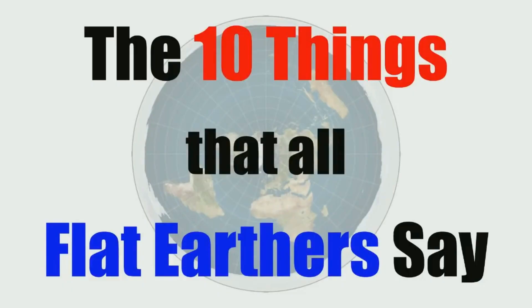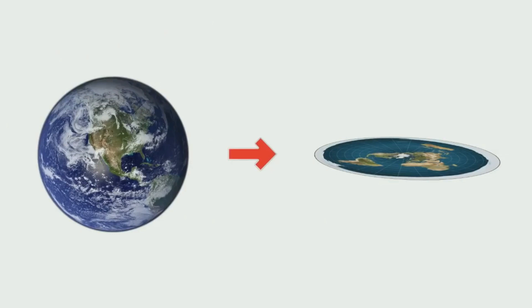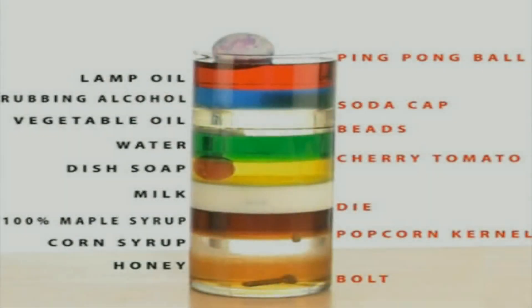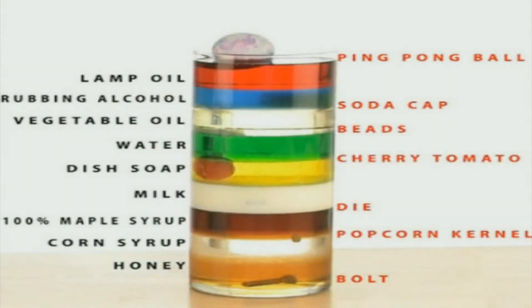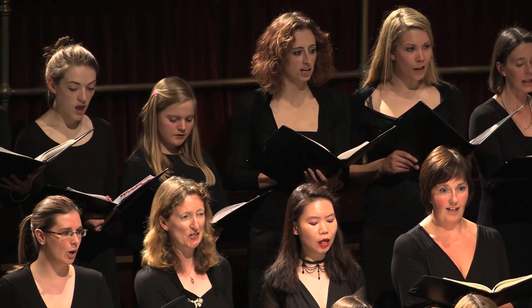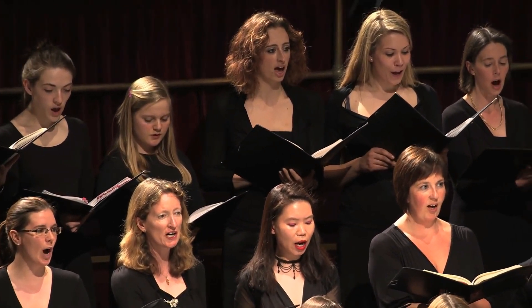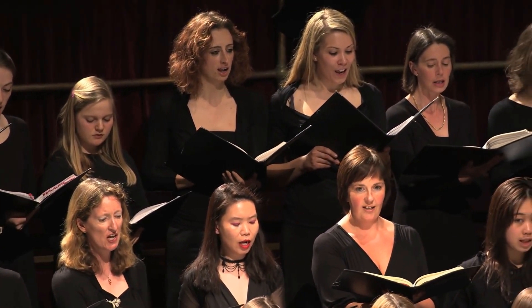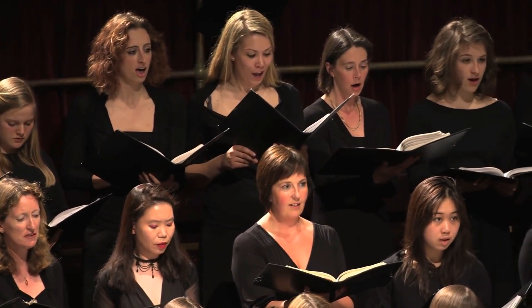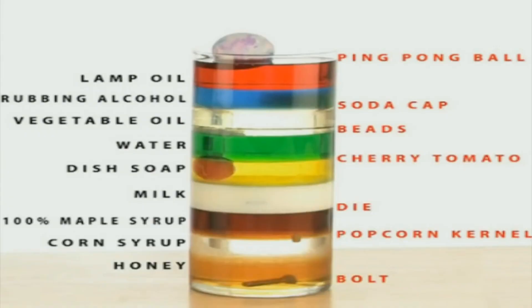The ten things that all flat earthers say. Number one: one extremely problematic side effect of taking the globe and flattening it out into a plane is that gravity makes no sense and there is no reason for things to fall to the ground. Quite simply, objects fall or rise based on their relative density to the medium surrounding them. Apples fall because they are denser than the air.